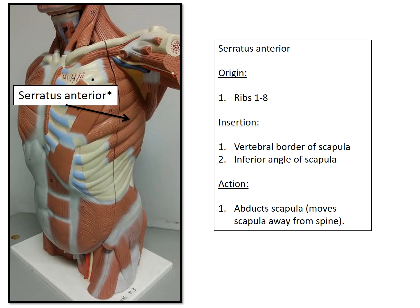The inferior angle of the scapula is also an insertion — the inferior angle would be the most inferior or bottom part of the scapula. The action for serratus anterior is to abduct the scapula, which means to move the scapula away from the spine.